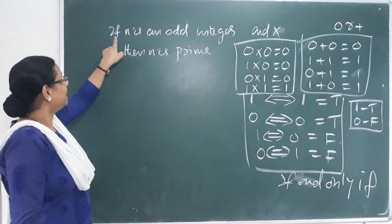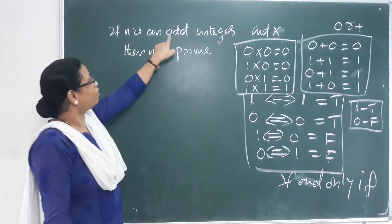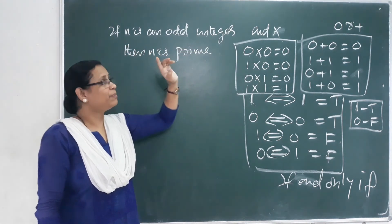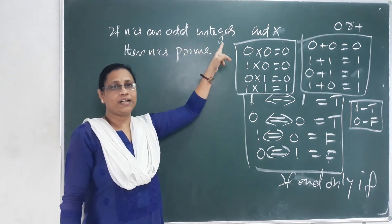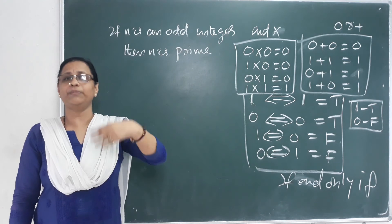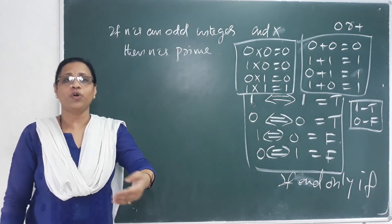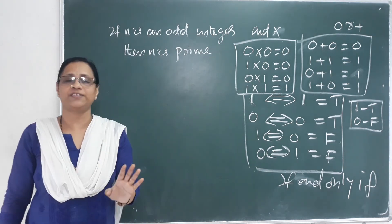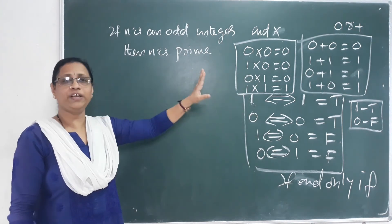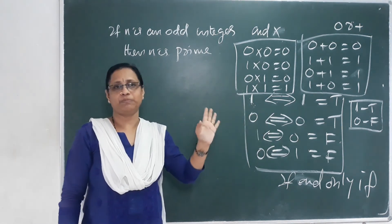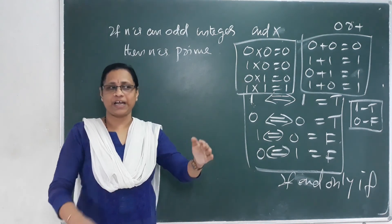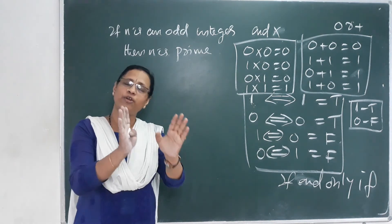Now it is simple. If n is an odd integer, then n is prime. If we call it an odd integer, we call it prime. But not all odd integers are prime, so we call it a counter-example. For example, 15 is an odd integer, but 15 is not a prime. Then there is a counter-example — that is why we call it a counter-example.